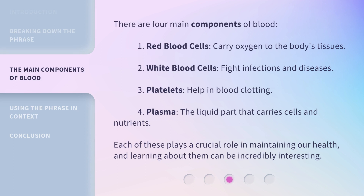There are four main components of blood. 1. Red blood cells — carry oxygen to the body's tissues. 2. White blood cells — fight infections and diseases. 3. Platelets — help in blood clotting. 4. Plasma — the liquid part that carries cells and nutrients. Each of these plays a crucial role in maintaining our health, and learning about them can be incredibly interesting.